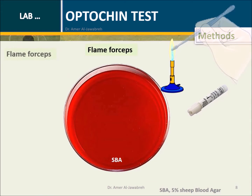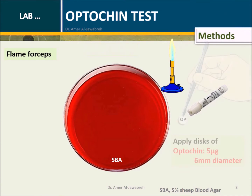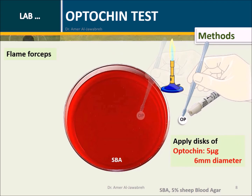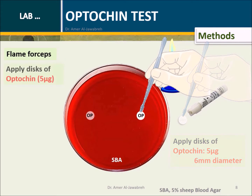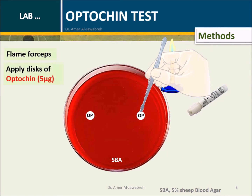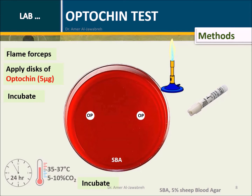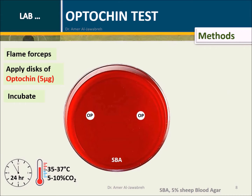Flame forceps. Apply discs of optochin to the streaked plates. Incubate for 24 hours at 35–37 degrees centigrade in 5–10% CO2.